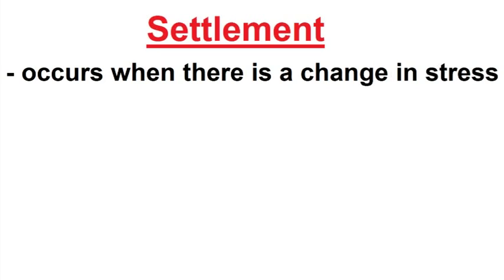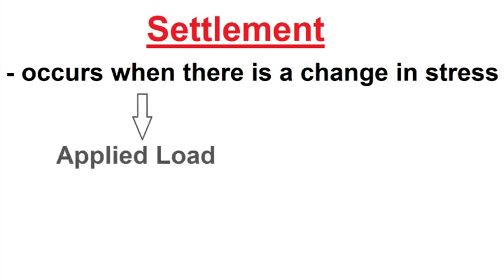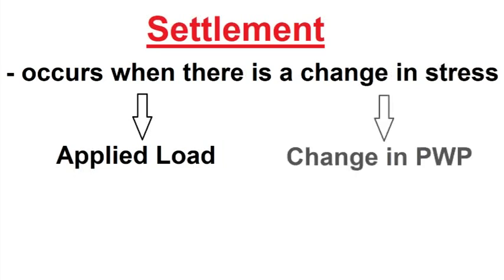Settlement occurs when a soil sample is subjected to a change in stress. This change can be the result of a change in applied load, for example through a new construction over top, or a change in pore water pressure, such as when the groundwater table changes.